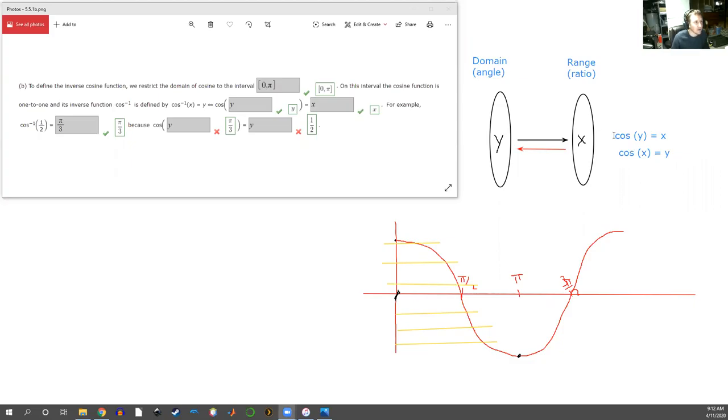So if cosine of y is x, then the cosine inverse of x is y. This inverse tells us we're going the other way. This little negative one here tells us we're going in the reverse direction.